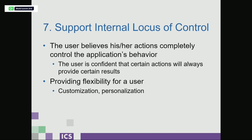Rule seven: supporting the internal locus of control. This is again making the user not feel stupid — making sure they feel in control of what they're doing. If they take a certain action in the software, the software should respond in a way that makes sense to them in a consistent fashion. If you've ever gotten deep in a complicated piece of desktop software and thought, 'How did I get here? How do I get back?' — you've lost that locus of control. Providing flexibility, providing customization, letting users set up their own shortcuts keeps them in control. That way they don't feel like the software is smarter than they are.